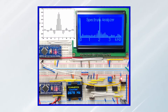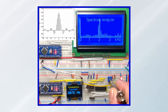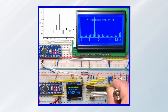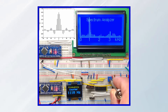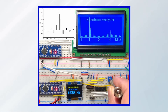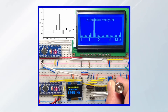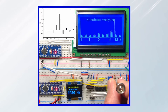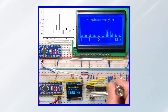Now for a quick demonstration. We apply a square wave to the analog input A0 and observe the spectrum on the spectrum analyzer. It should be a sinc function with the main lobe centered at the frequency of the square wave. Notice how the main lobe moves as we change the frequency of the square wave.